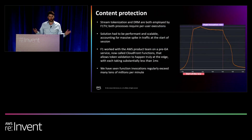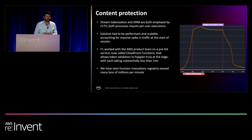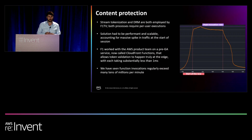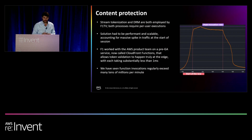Unglamorous but important to us and our broadcast partners is content protection. In addition to just playback, we must take this into account. Unlike video and audio, the unique individual tokens and keys used can't be as effectively cached, so scale is a problem here. We needed a solution that was performant, scalable, and able to handle massive load when users arrive on the platform. So F1 worked with AWS and the product team on a pre-GA service that allowed token validation to happen truly at the edge with each invocation taking less than one millisecond — that is CloudFront Functions. We now see function invocations regularly exceeding tens of millions of requests per minute.